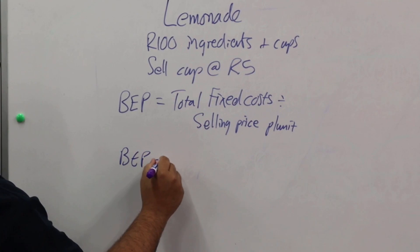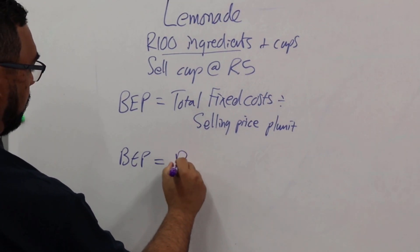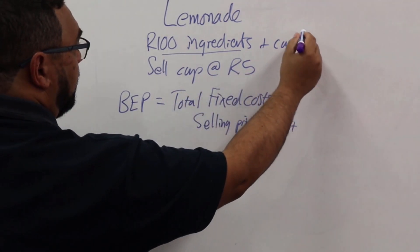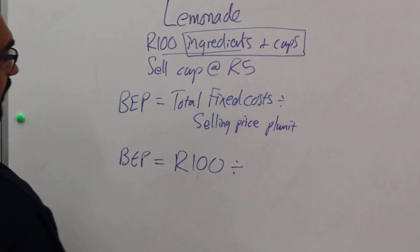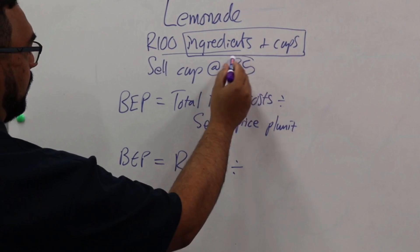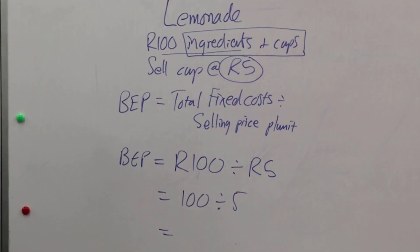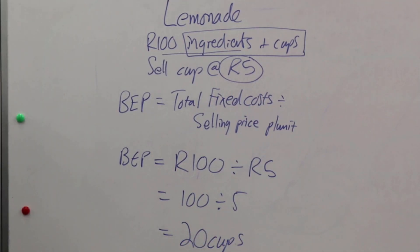Our break-even point equals our total fixed costs, which is 100 rand — because they told us we spend 100 rand in total on ingredients and cups. We divide that by the selling price, which is 5 rand per cup. So it's basically 100 divided by 5, and my break-even point is going to be 20 cups. So all I need to do is sell at least 20 cups in order to cover my costs, and obviously after that it's pure profit.